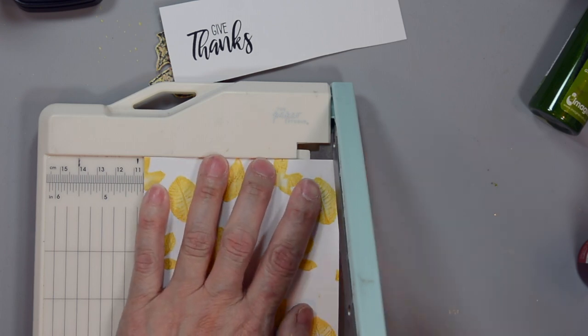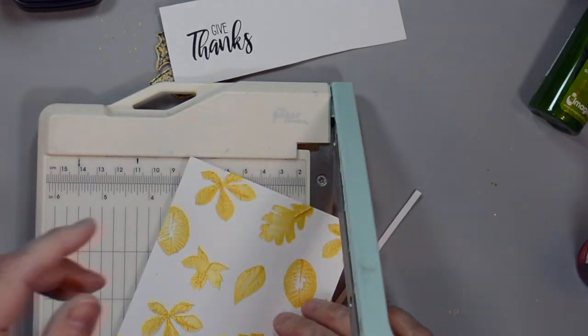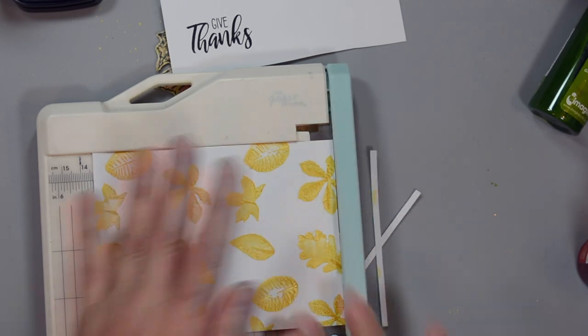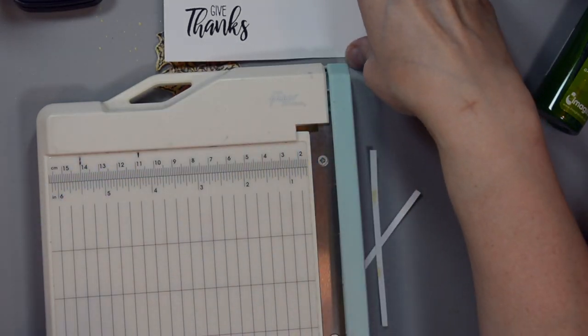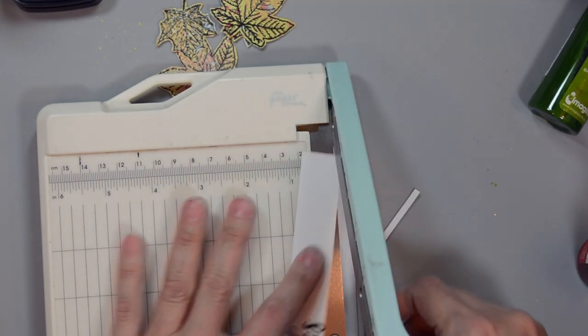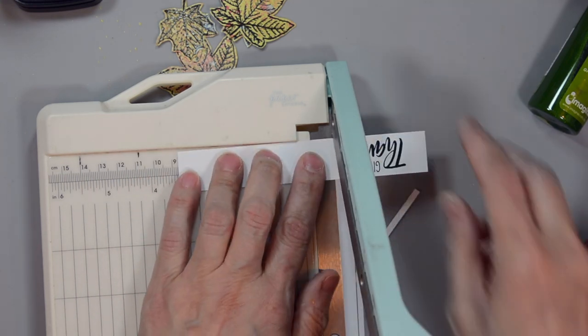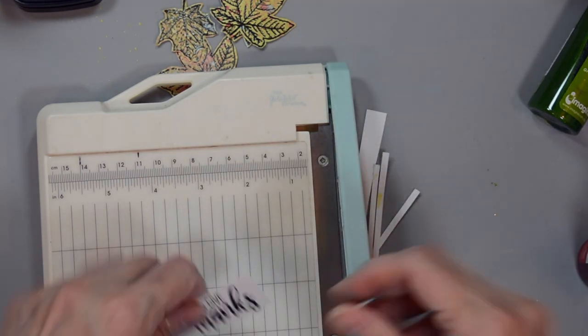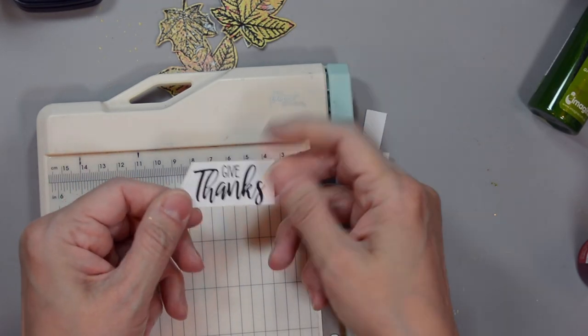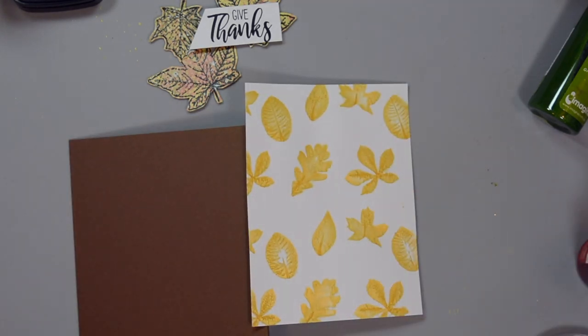So first I'm going to trim down my stenciled panel. I'm going to trim it down to four by five and a quarter so that I have a nice quarter inch frame on our card. I'm trimming our sentiment down and I trimmed it to a nice little square, and then I'm going to cut it on an angle on one end. This is so that I can nestle it beautifully between our leaves.